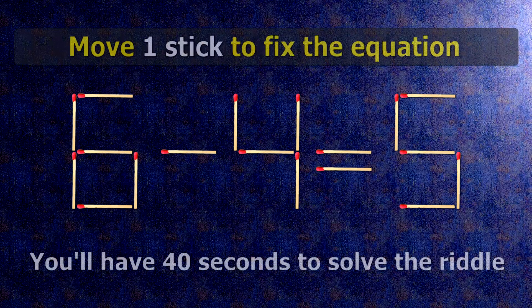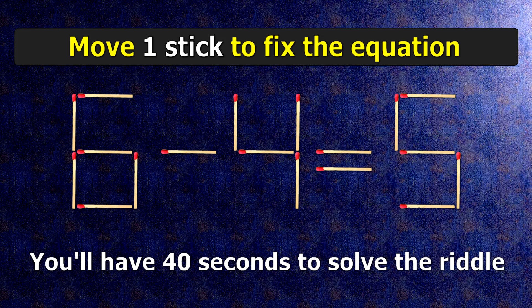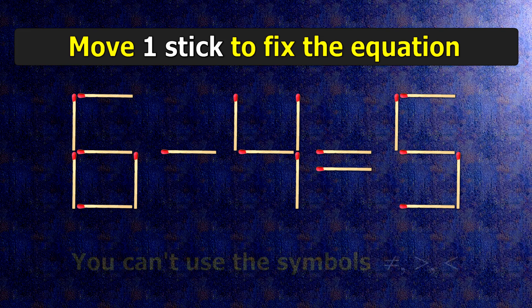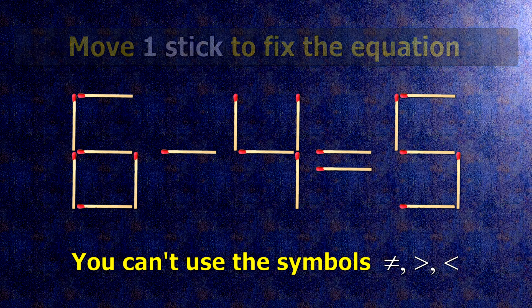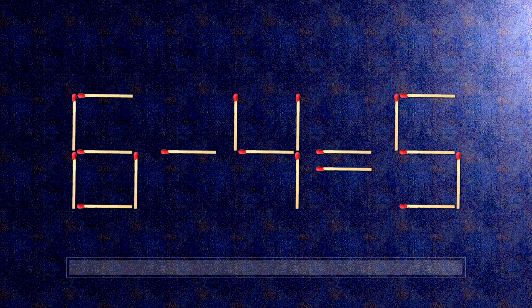We have the equality 6 minus 4 equals 5. Our equality is wrong. We need to move one match to make our equality correct.